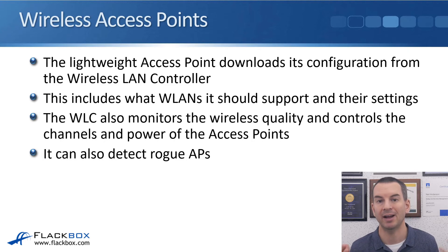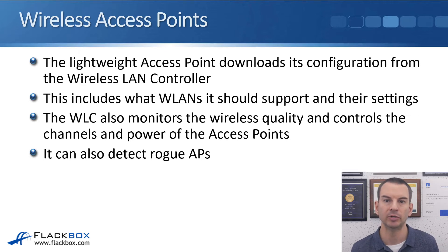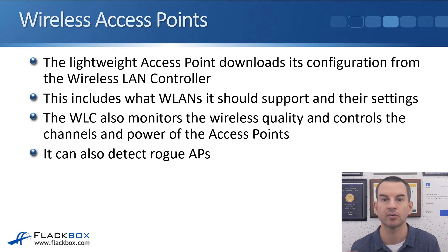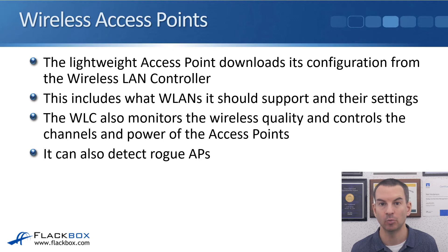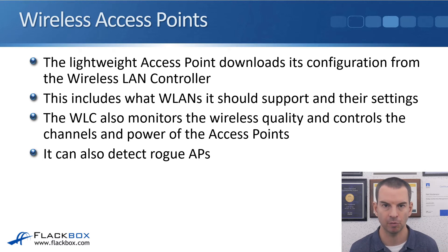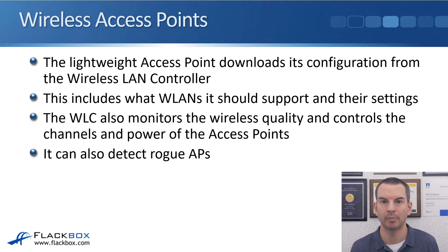The lightweight access point will discover the IP address of the wireless LAN controller through one of those methods, then connect and download its configuration — including which WLANs to support and their settings. The wireless LAN controller also monitors wireless quality and controls the channels and power of the access points, setting them up to use non-interfering channels and appropriate power levels so they don't interfere with each other.